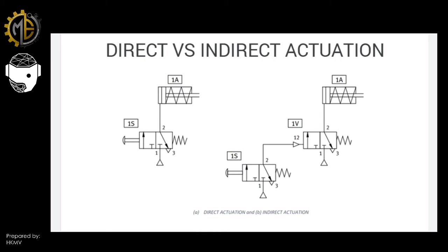First, you need to know the difference between direct versus indirect actuation. In direct actuation, the signal from the input element goes directly to the actuator. In indirect actuation, the signal from the input element goes first to the final control element, and then the final control element drives the actuator. That is the only difference between the two.